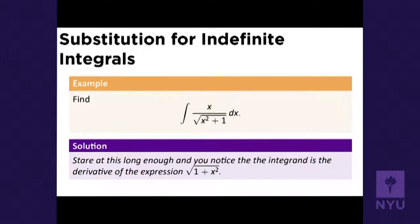We can take the derivative: √(1 + x²) is (1 + x²)^(1/2), so its derivative is 1/2 · (1 + x²)^(−1/2) · 2x. The 1/2 and the 2 cancel, leaving x in the numerator and (1 + x²)^(−1/2) in the denominator — that's 1/√(x² + 1). That does work out. It is true that √(1 + x²) is the answer. But I don't know how long it would take all of us to stare at that question and get the answer.